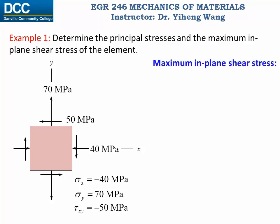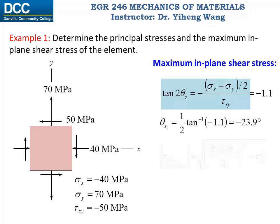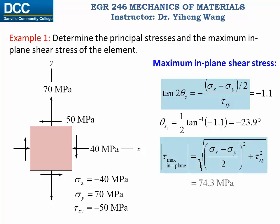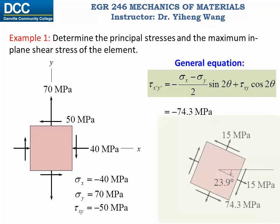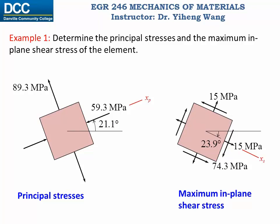Now let's find the maximum in-plane shear stress. We first determine the orientation from the theta_s equation. The absolute value of the maximum in-plane shear stress is 74.3 MPa, and the corresponding normal stress — the same on all four sides — is the average normal stress of 15 MPa. Using the general equation to confirm the shear stress direction, the result is -74.3 MPa. Plotting the principal stress and maximum shear stress results side by side, the difference between the two orientations is a 45-degree angle.